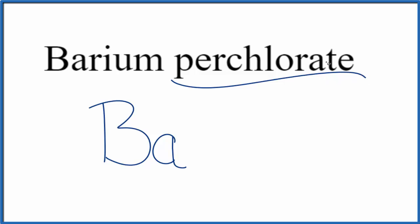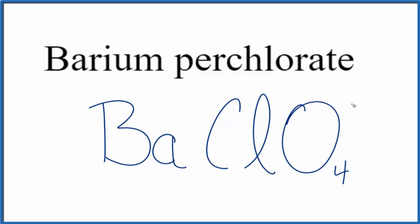For perchlorate, you won't find this on the periodic table. It ends in A T E, which means it's a polyatomic ion. You either memorize that the perchlorate ion is Cl O 4, and the whole thing has a 1 minus ionic charge, or if you're allowed, you look it up on a table of polyatomic ions.